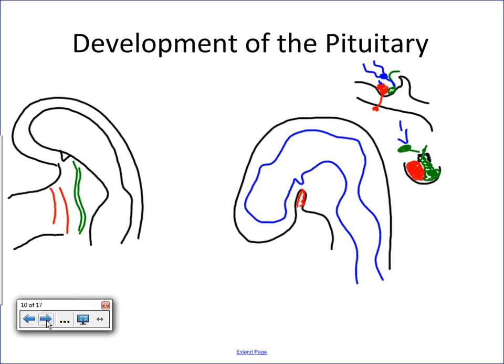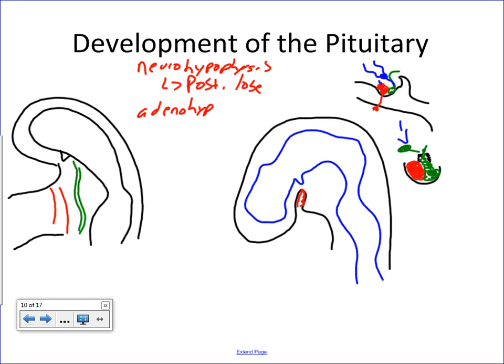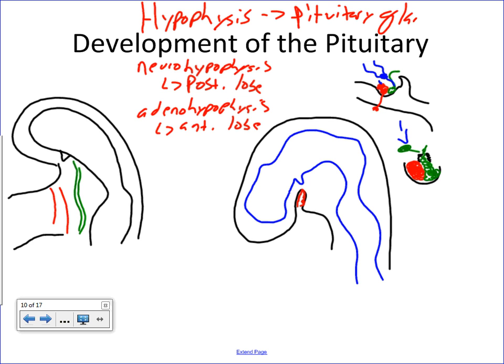When it comes to understanding the pituitary gland, you have to understand that it is regulated differently because of how it develops. There are two lobes: the neurohypophysis, which is the posterior lobe, and what's called the adenohypophysis, which is the anterior lobe. The word hypophysis essentially means the pituitary gland — that's the specific term for the pituitary gland itself.